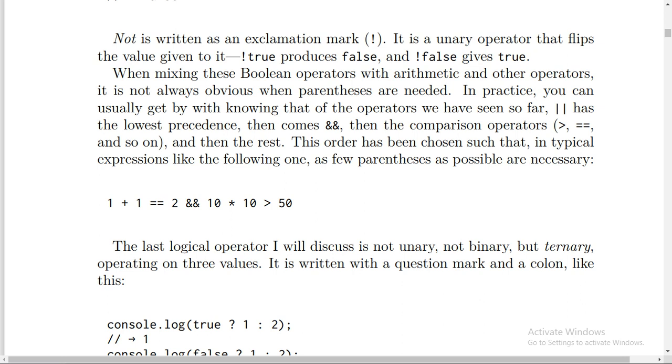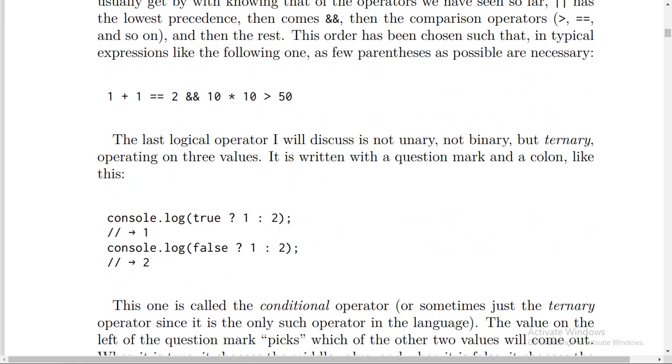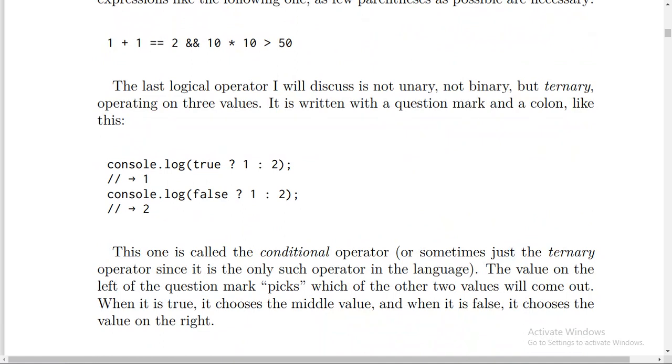The last logical operator I will discuss is not unary and not binary, but ternary, operating on three values. It's written with a question mark and a colon like this. Console.log(true ? 1 : 2) will be 1. Console.log(false ? 1 : 2).